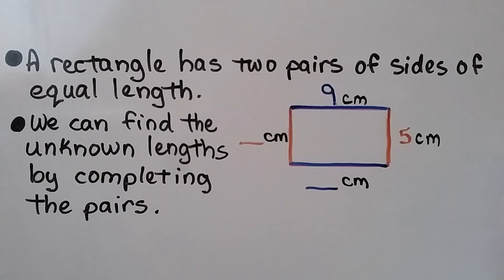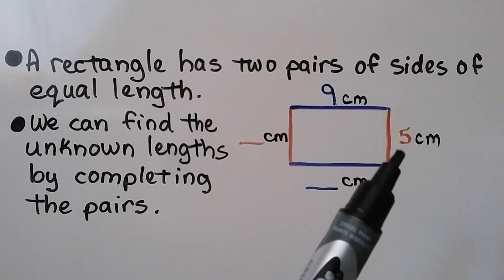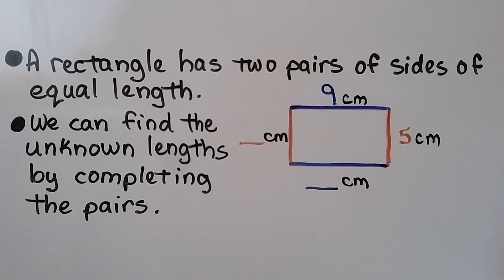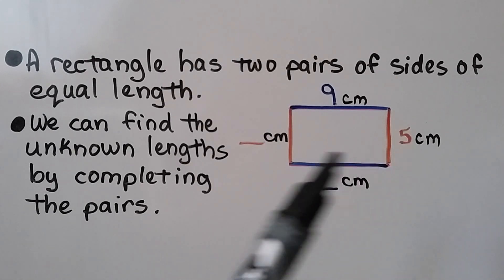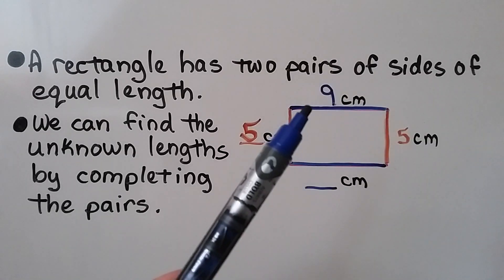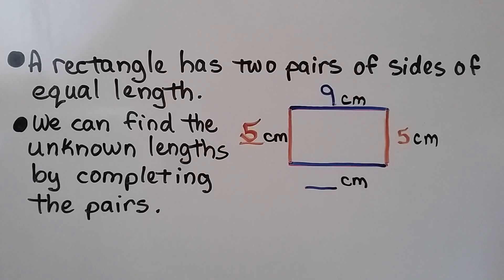A rectangle has two pairs of sides of equal length, and we can find the unknown lengths by completing the pairs. We can see that this side is 5 centimeters and this side is 9 centimeters. Because there are two pairs of sides of equal length, if this side is 5 centimeters then this side must be 5 centimeters, and if this side is 9 centimeters then this side must be 9 centimeters. Using that rule, we found the unknown lengths. We could even find the perimeter.